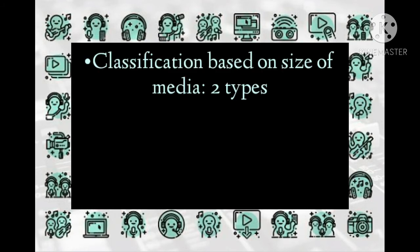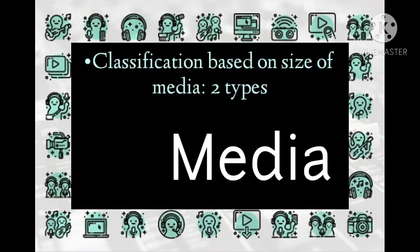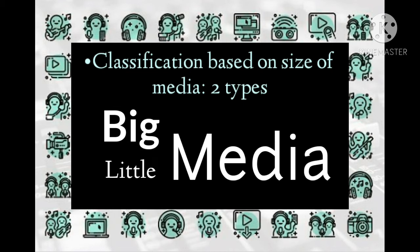Classification based on size of media: two types. Big media includes computers and television, while little media includes radio, film strips, graphics, and audio cassettes.